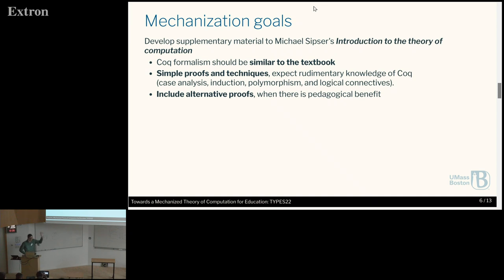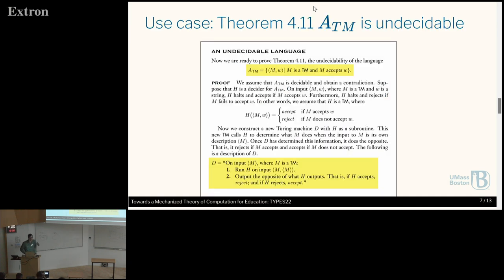We include in the open source library some alternative proofs if they're pedagogically interesting — if they're smaller or use fewer concepts. What you see here is an excerpt from Sipser's book, where we prove that the language ATM is undecidable. First, ATM is defined as any language recognized by a Turing machine, and then the proof shows that ATM is undecidable.